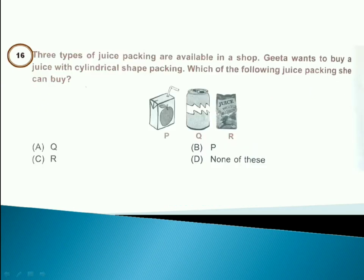3 types of juice packing are available in the shop. Gita wants to buy a juice with cylindrical shape packing. Which of the following juice packing she can buy? Answer is option A. Only Q is cylindrical.